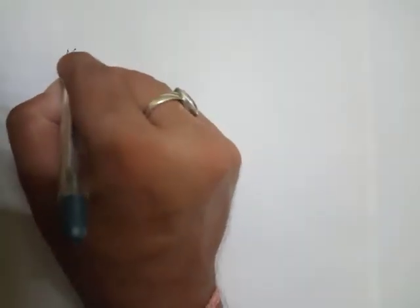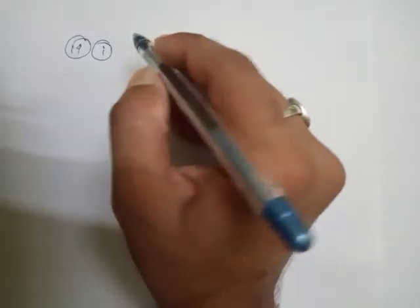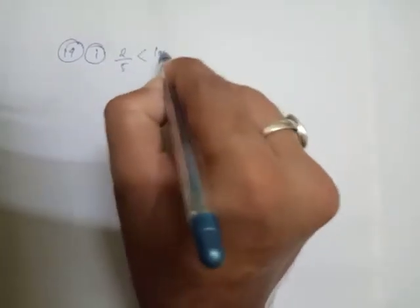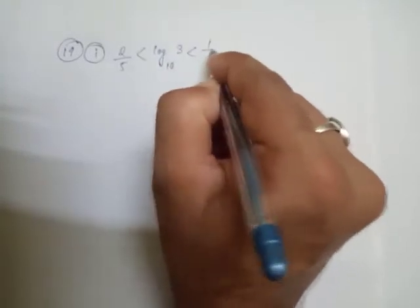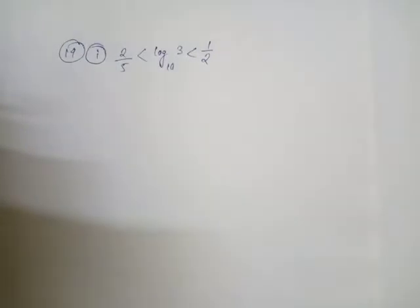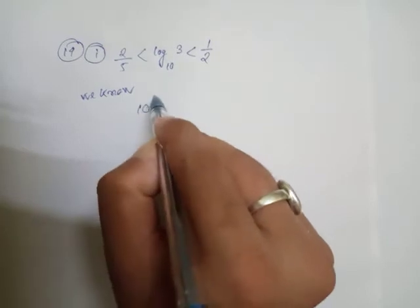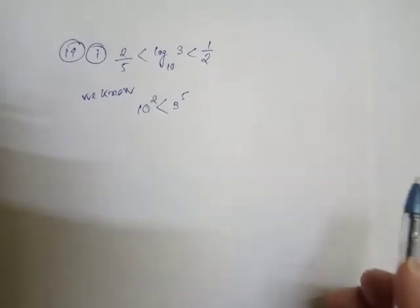The first one — 14 Roman (i). The given question is: 2/5 < log base 10 of 3 < 1/2. We have to prove this. We know that 10 squared is less than 3 to the power 5, obviously because 10 squared is 100, and 100 is less than 3 to the power 5.